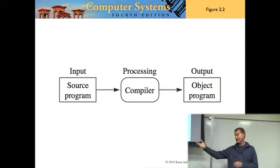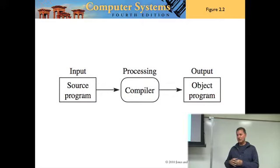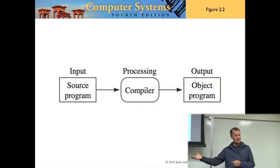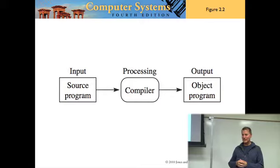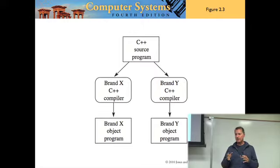You can compile and run a C++ program on a Windows machine or a Mac machine. How is it that one program can run on two different kinds of machines? Two different compilers. In figure 2.3, one C++ source program compiled on Brand X produces a Brand X object program; compiled with a Brand Y compiler, it produces a Brand Y object program.